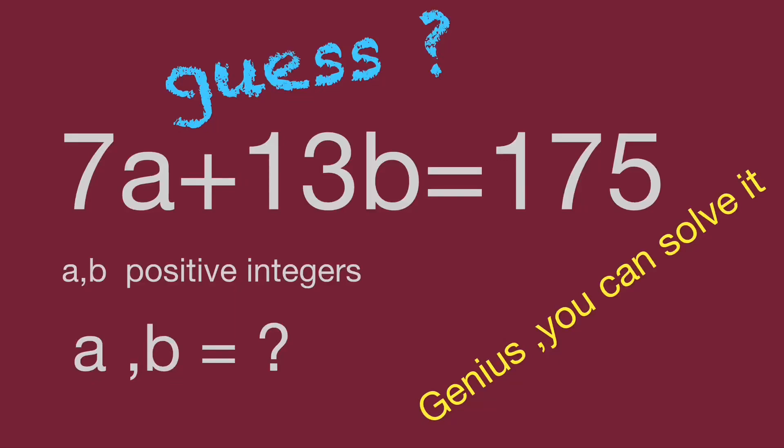Hello, you are watching Balehippo Math Genius Riddles. Here's an interesting question to find the numbers: 7 times a plus 13 times b equals 175, where a and b are positive integers. Find the value for a and b.